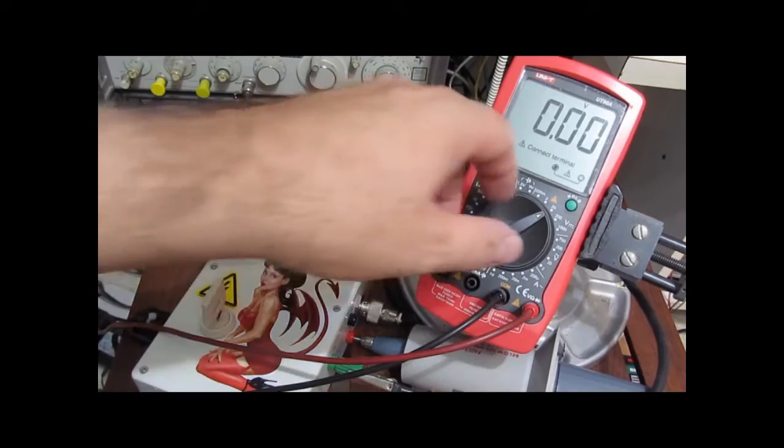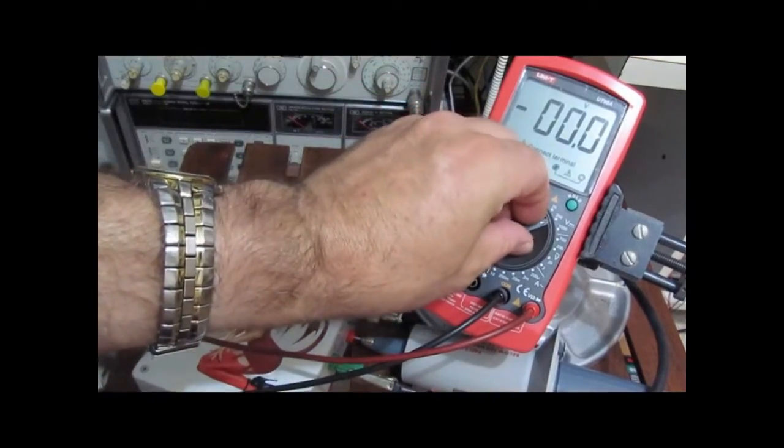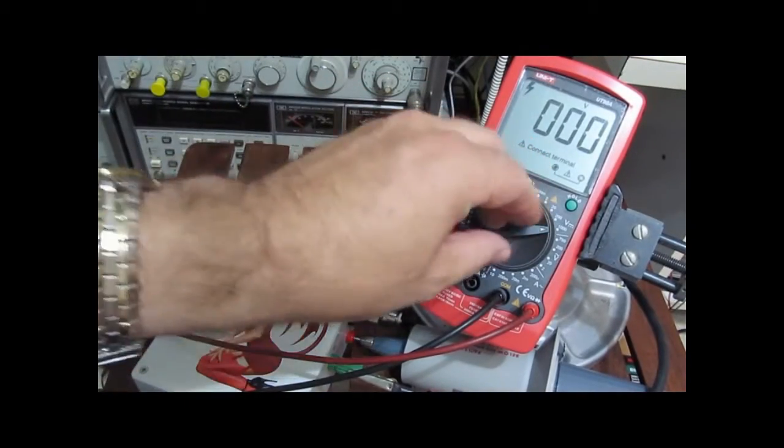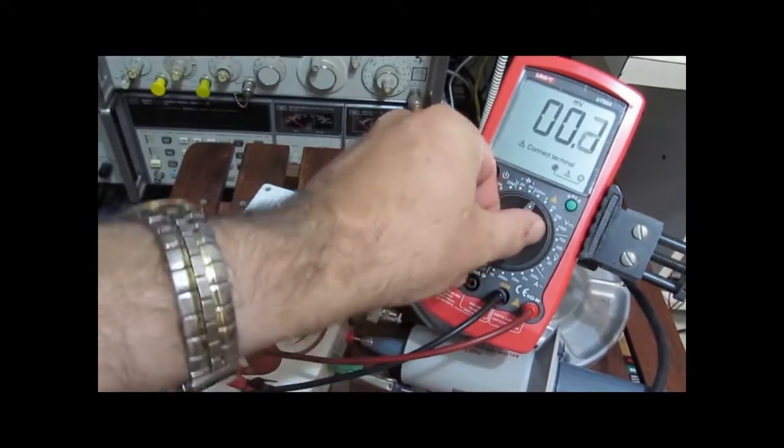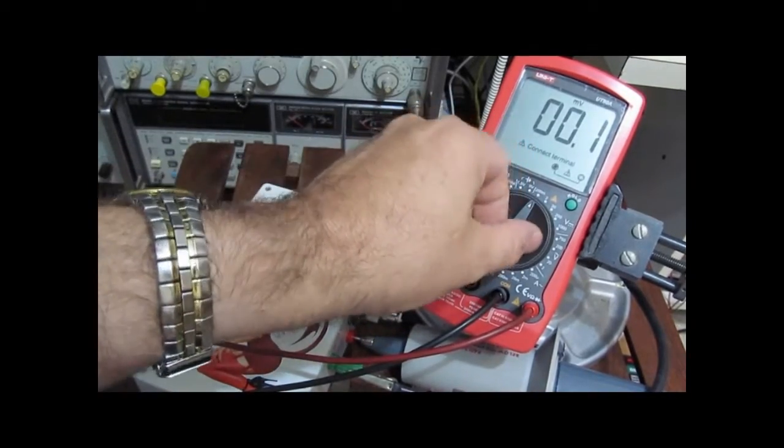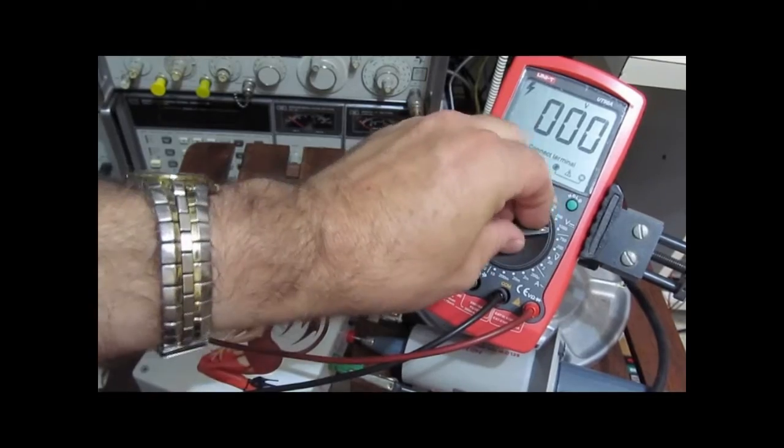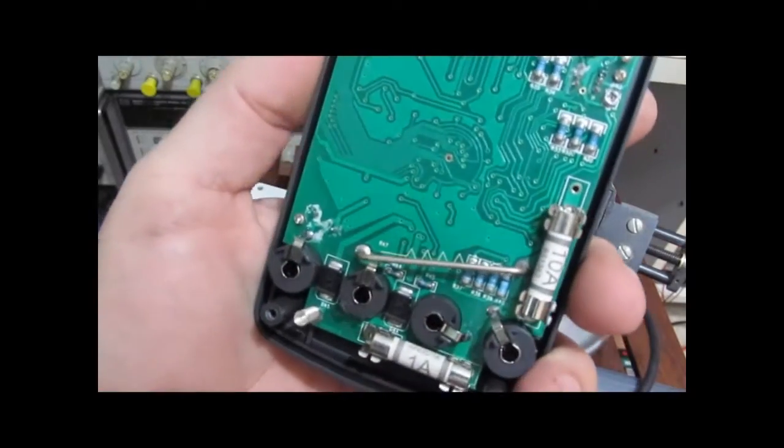So this right now has a 50 volt signal applied to it. You can see it's reading 0 volts now. You get a little bit of a signal out in the millivolts range but that's it.